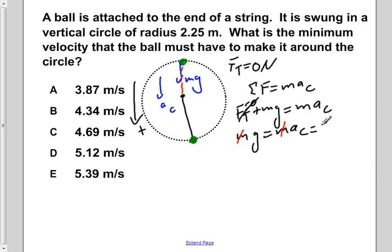Remember, however, that the centripetal acceleration is equal to v squared over r. So we now have that v squared over r is equal to g. So what we want to know is the minimum velocity, so we want to solve for v. We're going to multiply both sides by r.